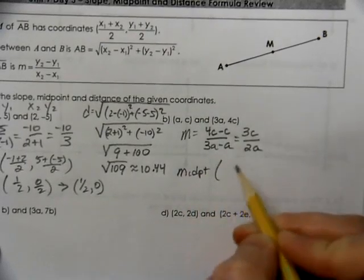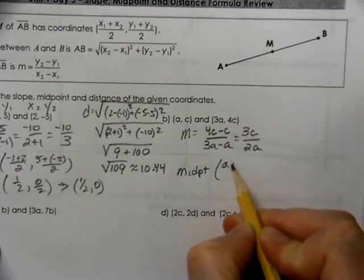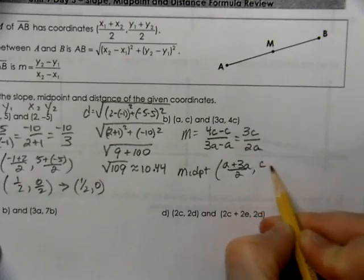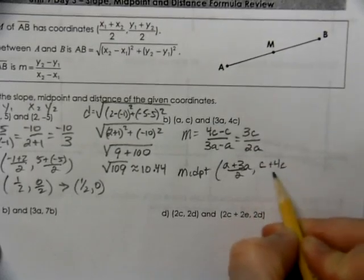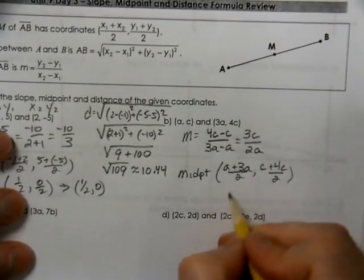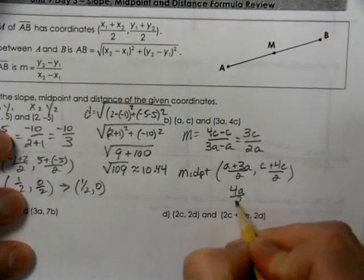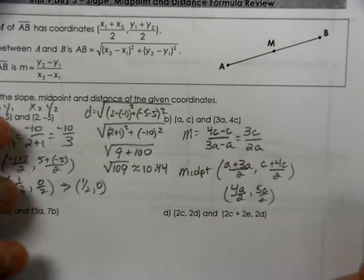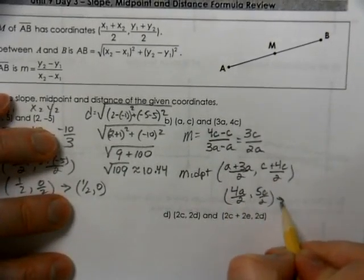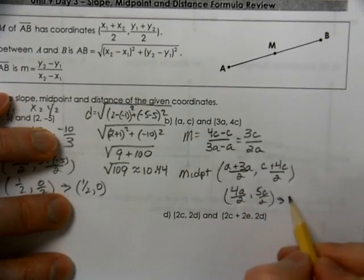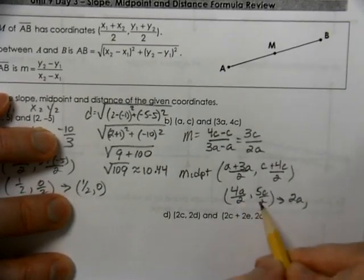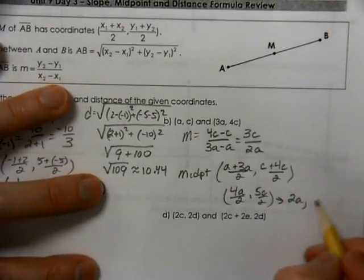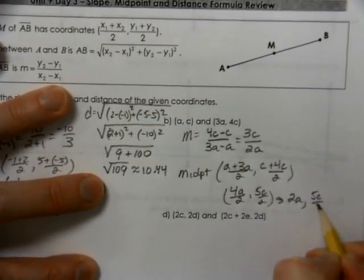The midpoint. You have your x1 plus x2 over 2 and y1 plus y2 over 2. That becomes 4a over 2 and 5c over 2. Well, you can take half of 4a, but you really can't take half of 5. It's 2.5. We typically won't use decimals, so we'll leave that as 2a comma 5c over 2.